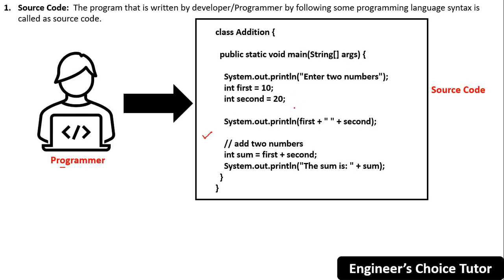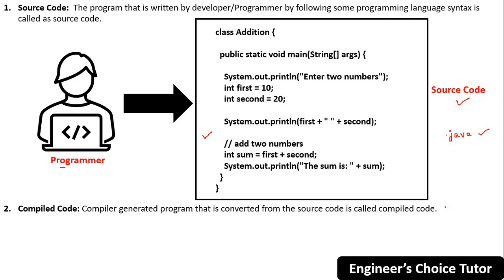The addition code takes two numbers and provides their sum as output. This code is written by the programmer or developer, which is why it is called source code. Source code is a developer-written program according to programming language syntax. In Java, the extension of the source code file is .java.